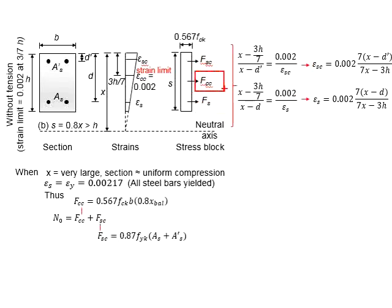The FCC is determined by multiplying 0.567FCK times S and times B, as given here. And S now is equal to H, so you may straightaway use this formula.